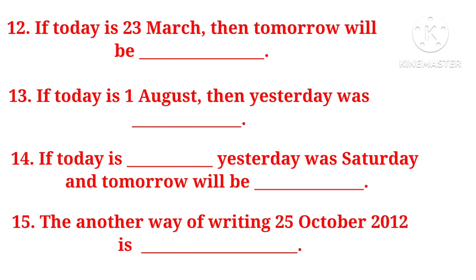If today is 23 March, then tomorrow will be 24 March. If today is 1 August, then yesterday was dash. Agar aaj 1st August hai, toh kal kya tha? 31st July.